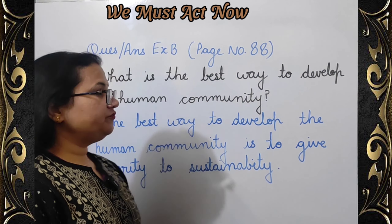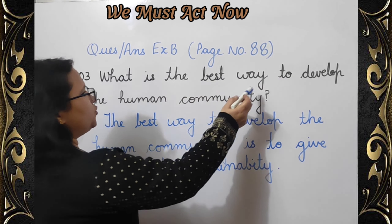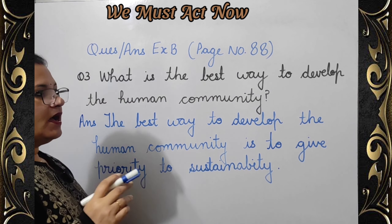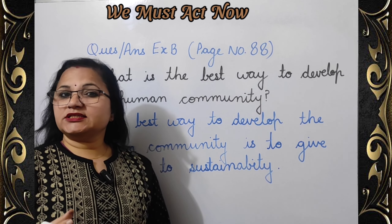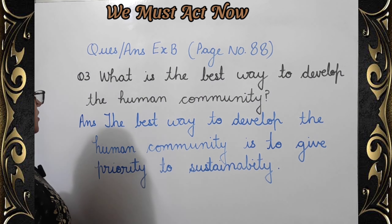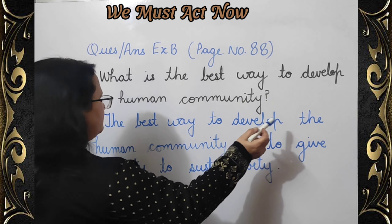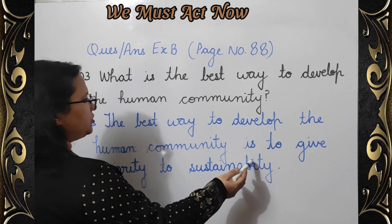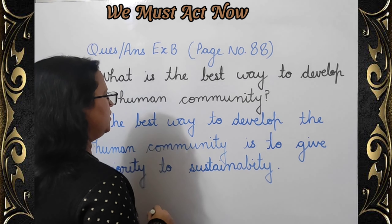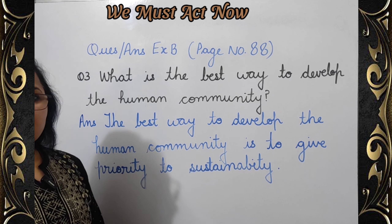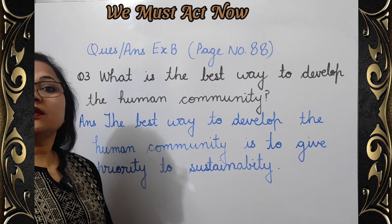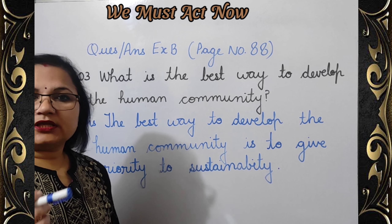Question number three: What is the best way to develop the human community? Answer: The best way to develop the human community is to give priority to sustainability. مانو سمودائی کے وکاس کا سب سے اچھا طریقہ یہ ہے کہ ہم ستھرتا کو ہی پراتھ مکتا دیں۔